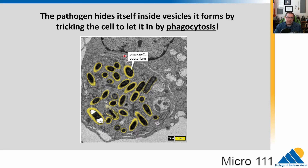Let's come back to this image. The bacteria — this dark bit — is hiding inside of little vesicles inside of an intestinal cell. The pathogen has gotten itself inside of our cells by tricking them. It's causing the cells to do phagocytosis — that's cellular eating — but it stops the process midway. And now it's got a little home in there.